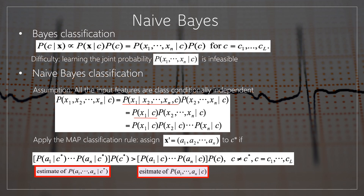Under this assumption, P of X1, X2, so on up to Xn given C can be split into P of X1 given X2 so on up to Xn, C, into P of X2 given X3 so on up to Xn given C, which can be further simplified into P of X1 given C, into P of X2 given C, so on up to P of Xn given C.